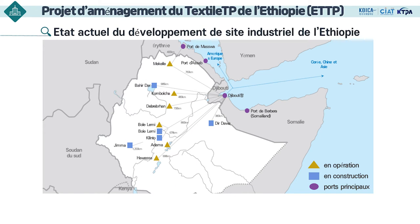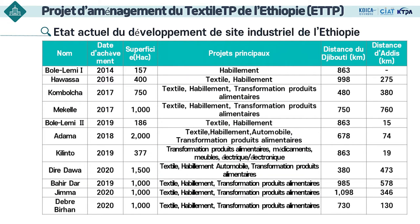Voici l'état actuel du développement des sites industriels en Éthiopie. Avec un emprunt de la Banque mondiale, 11 sites industriels ont été construits au projet du premier stade. Les parties marquées en bleu sont les sites en construction, dont certains ont déjà été construits — Kilinto et Bolelemi sont déjà finis, et Djima est sur le point de se terminer. 6 sites industriels marqués en triangle jaune sont déjà en train de fonctionner. Vous pouvez voir les 11 sites industriels, la période d'achèvement, la superficie et les principales industries attirantes.